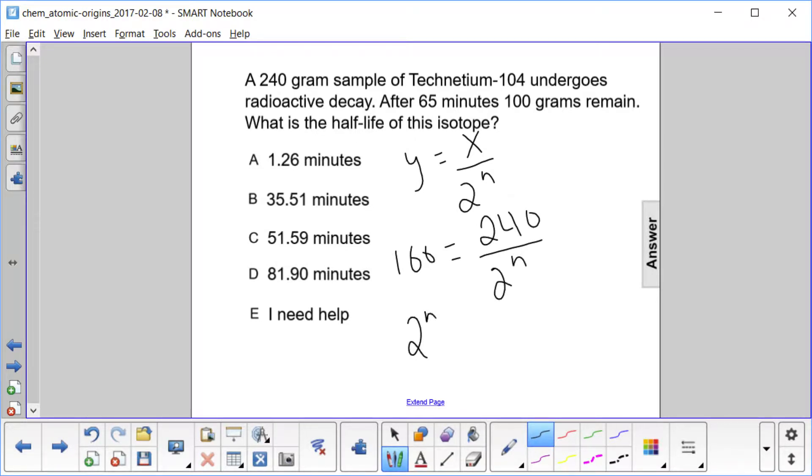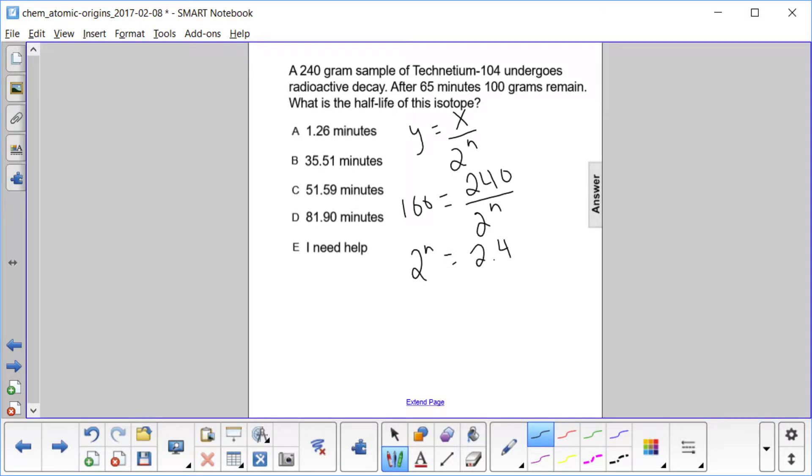That means that 2 to the n is 2.4. To solve for this n, we have to take the log of both sides and that means that n is the log of 2.4 over the log of 2.